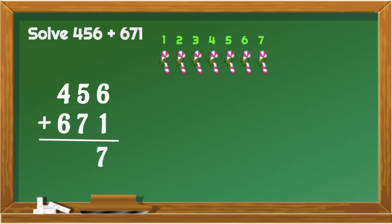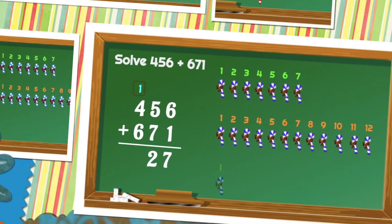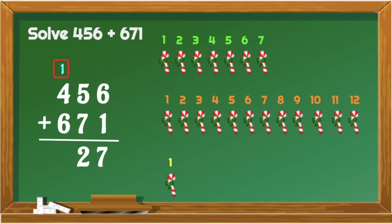This time, we add 5 and 7. So, from 5, let's count on. 6, 7, 8, 9, 10, 11, 12. Let's put 2 below 7 and carry 1 on top of 4.